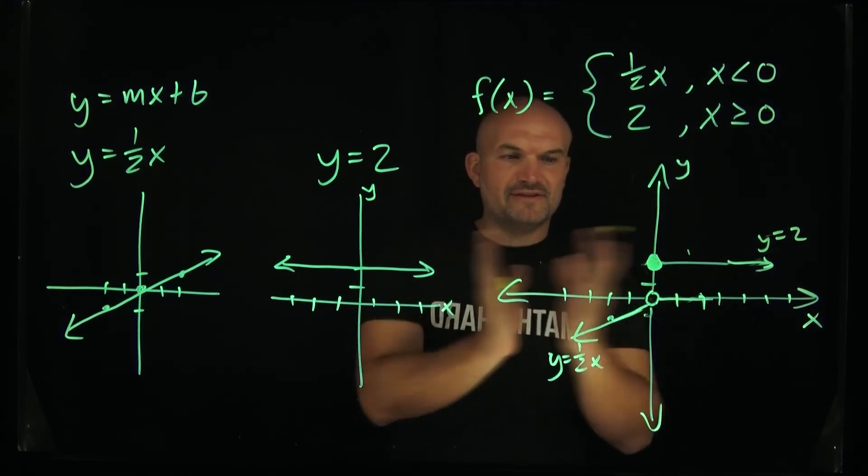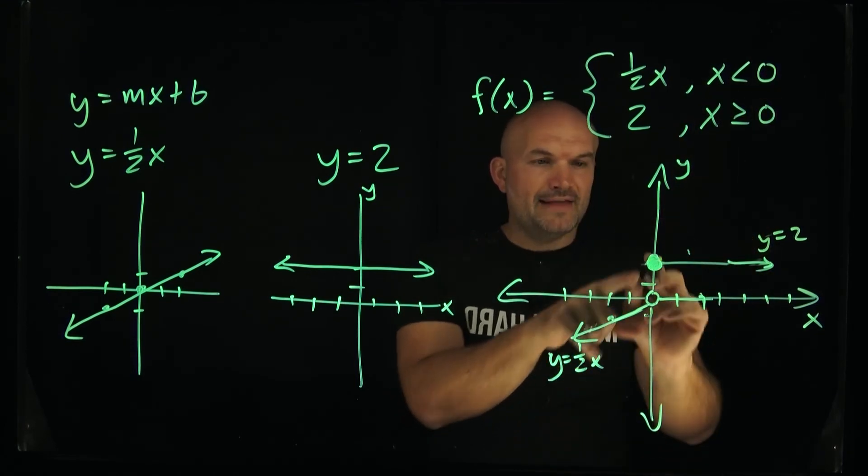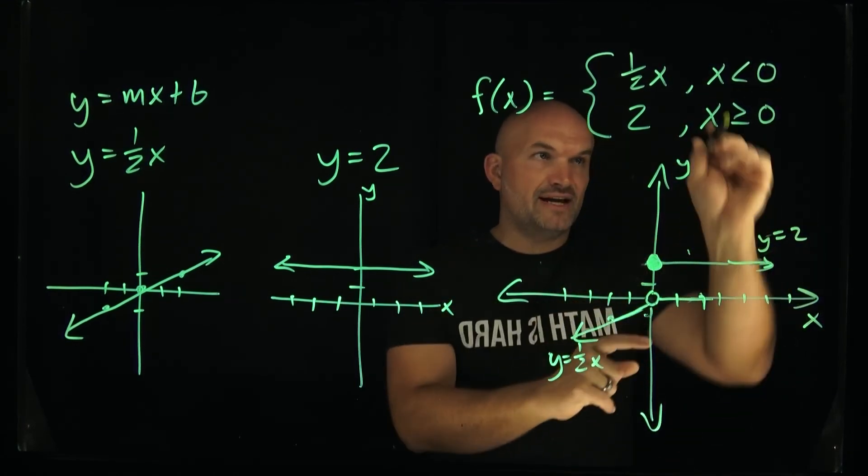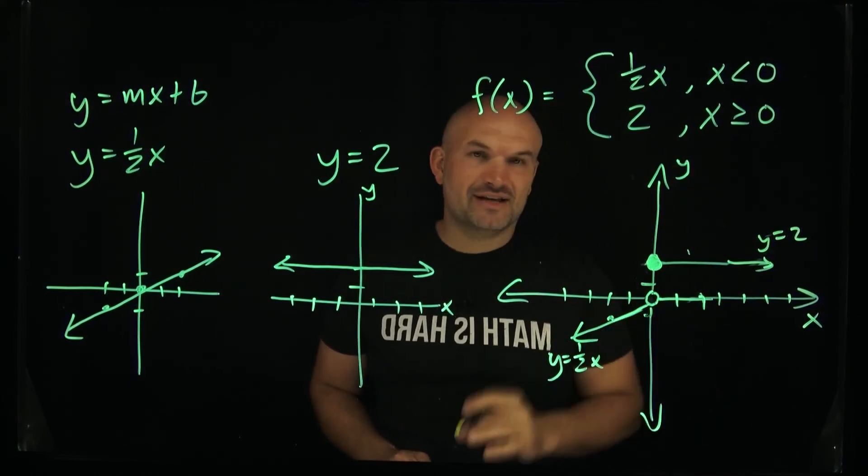Like everything over to the left of 0 is 1/2x which is going to be true which is good. And then everything at 0 or to the right, positive values, 2 is going to be true. So therefore that is how you're going to graph a function like this.